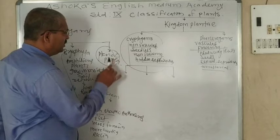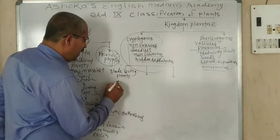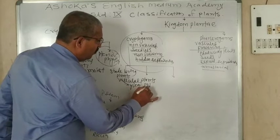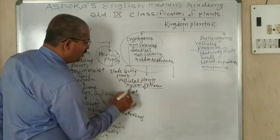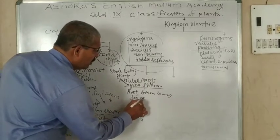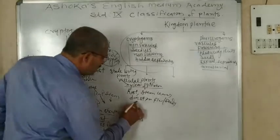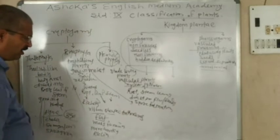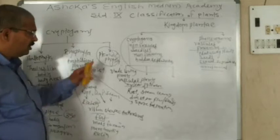The third part is Pteridophyta — shade-loving plants. These plants have vascular tissues: xylem and phloem. Their body is divided into root, stem, and leaves. But they do not produce flowers and do not produce seeds. Reproduction takes place by spore formation. In the case of Bryophyta also, there is spore formation, as they are also unable to produce seeds.